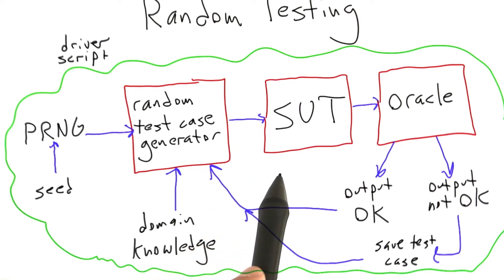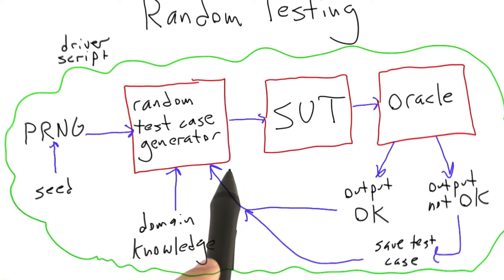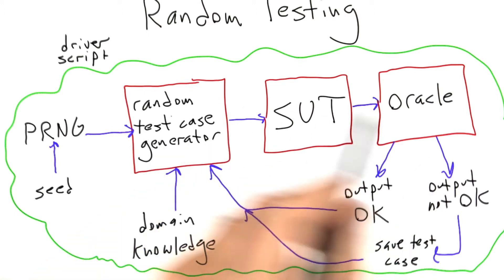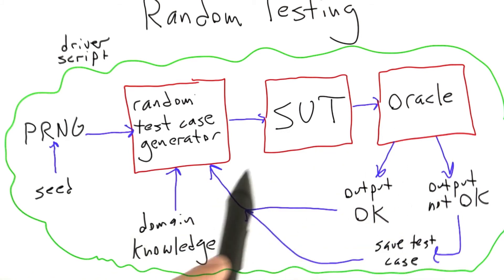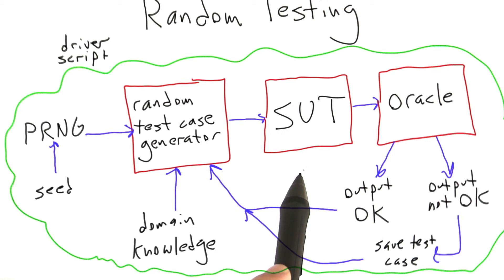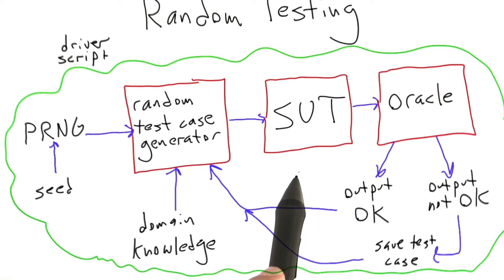The driver scripts are then checking the output, saving the test cases — or in this case, the seed — in a log file, and then going back and doing it again. In about two days of testing time, this loop had executed about 150,000 times on a fast 8-core machine.